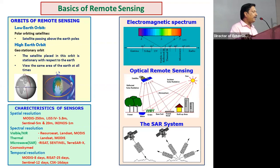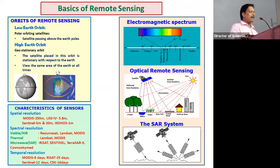When we think about the application of remote sensing, we should have a basic understanding of how it works. It is based on the electromagnetic spectrum — at different wavelengths, we get information about different objects. This electromagnetic spectrum has different bands: the visible spectrum covering 400 to 700 nanometers, then the infrared range, then the thermal range, and microwave.